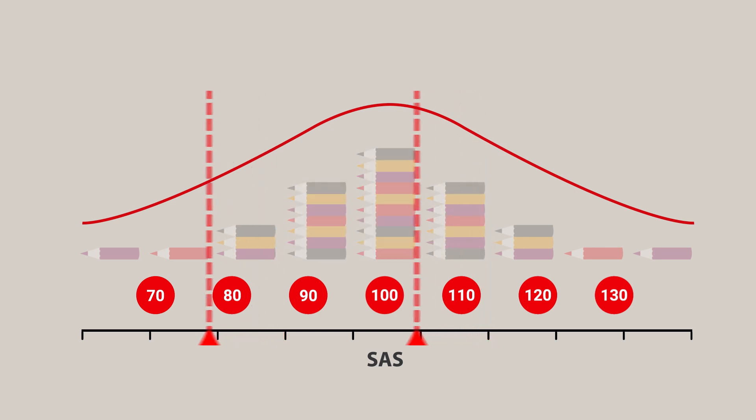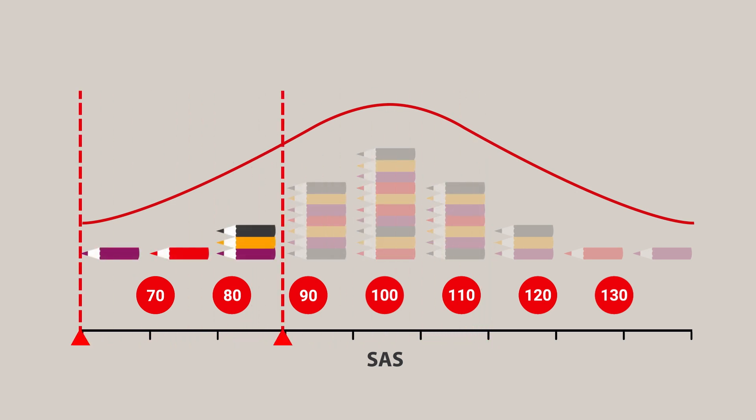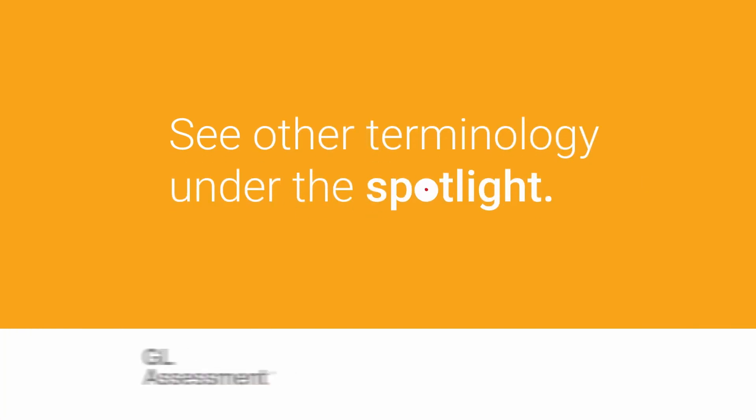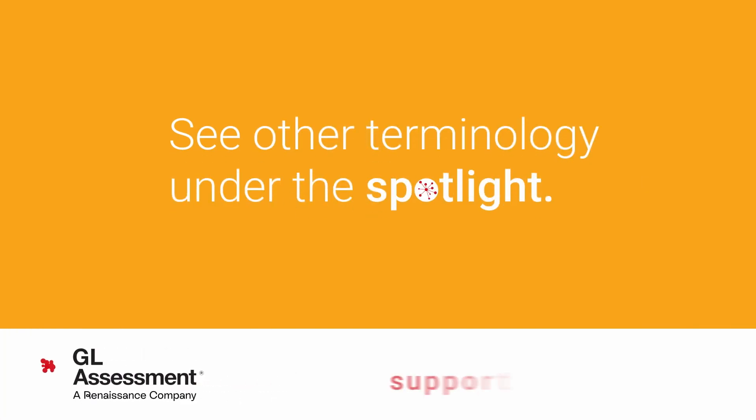Those under 89 are performing below the average, and those above 111 are performing above average. See other terminology under the spotlight.